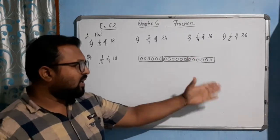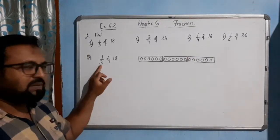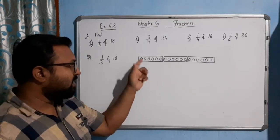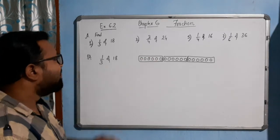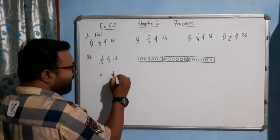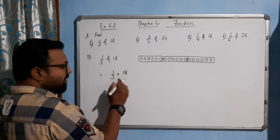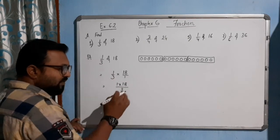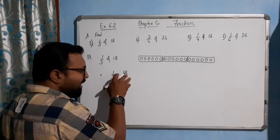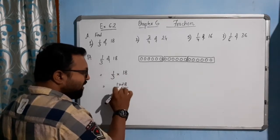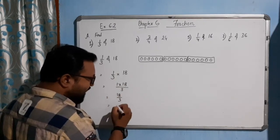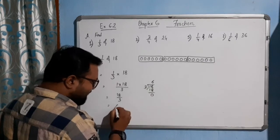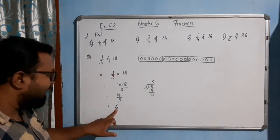It's very simple. 18 balls are separated into 3 different packets, equally. So these 18 are divided into 3 equal packets. Each packet contains 6 balls. We can write this thing like this: 1 by 3 of means multiplication by 18, which looks like 1 into 18 by 3. If we divide 18 by 3, 3 sixes are 18, so we are getting 6. So 1 by 3 of 18 will be 6.